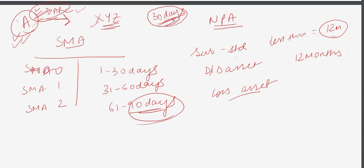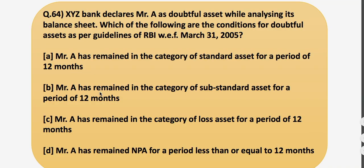In cases where the resolution plan is to be implemented, all the lenders—ABC, XYZ, and any other bank from where A has taken the loan—shall enter into an inter-creditor agreement during the 30 days review period. The basic aim is that even if A has not defaulted on the loans taken from XYZ, it has to play safe and check whether A has defaulted on any other loans taken from any other lender. So after understanding this basic concept of NPA, let's move back to the question. The answer here is Mr. A has remained in the category of substandard asset for a period of 12 months as we have already discussed it.